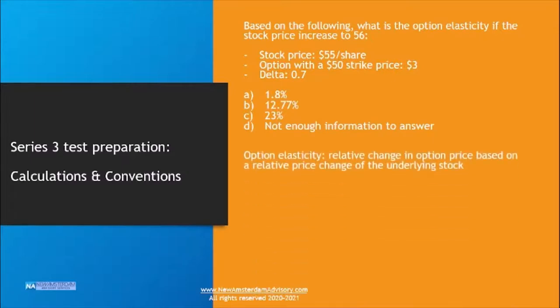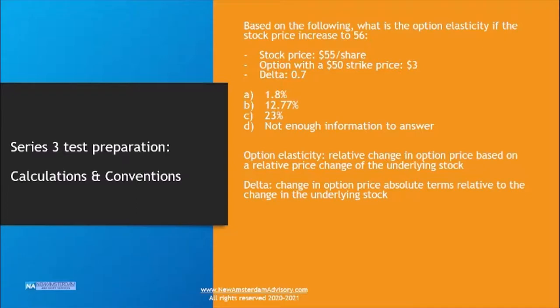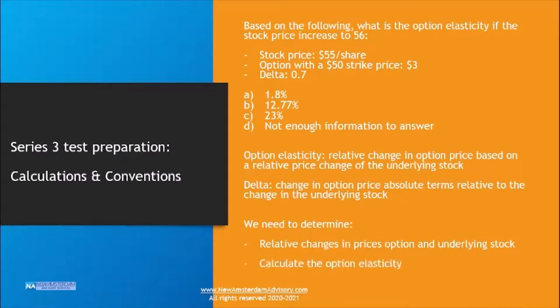Option elasticity is the relative change in the option price based on a relative change in the underlying stock — a percentage-based measure. The delta, on the other hand, is not a relative but an absolute indicator — it shows the absolute change in the option price relative to the change in the underlying stock. We need to determine the relative changes in the prices of the option and the underlying stock, then calculate the option elasticity based on those relative changes.